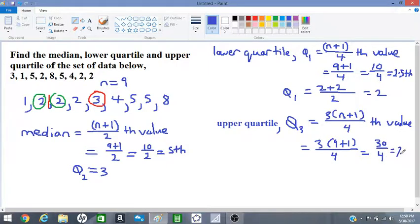Which is 7.5. The 7.5th value is between the 7th and 8th values. Counting: 1, 2, 3, 4, 5, 6, 7, and 8. Between these two numbers.